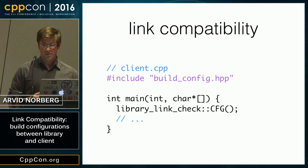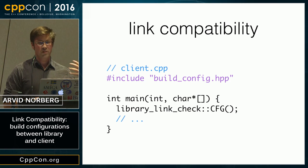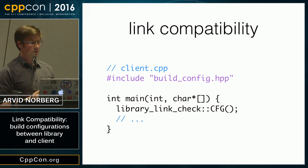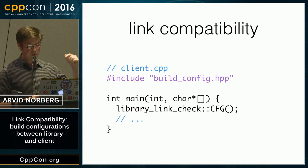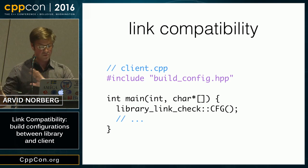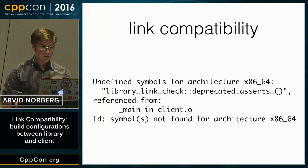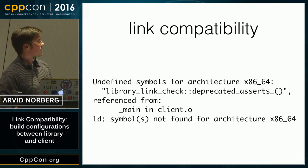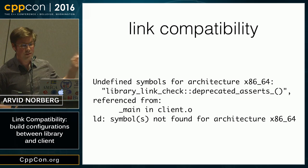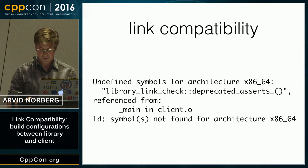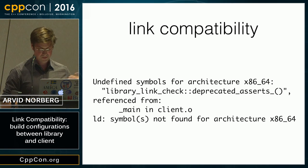Then somehow you force your clients to attempt to make a call to this function. You can do this through different ways. For instance, if you have a main class that you have to instantiate to use your library, you can have its constructor be inlined, make a call to this, and then forward that call to the actual constructor. And then you get this instead — a link error.